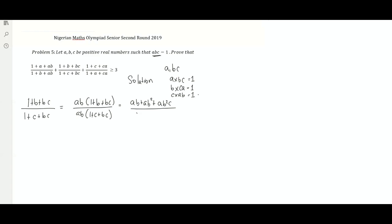So the denominator of the second term after multiplying by AB is actually the same denominator as the first term: 1 plus B plus AB. This is how these questions hide the structure — the denominators are products of maybe AB times another denominator, or C times another denominator. The last term in the numerator becomes AB squared C, which breaks down to B using the condition, giving us AB plus 1 plus B.